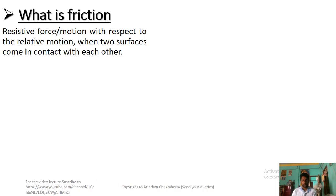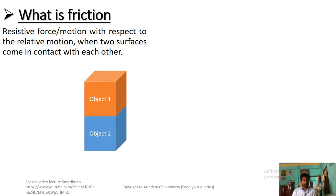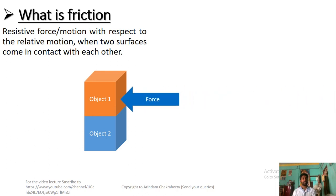Friction happens between two surfaces of objects which come in contact with each other. Consider object 1 and object 2 in contact. Whether object 2 is moving in one direction and object 1 is moving in another direction, or one is static, the phenomenon occurs in both static and dynamic positions. If a force is applied on object 1 towards the negative x direction, there will be an anti-force — that anti-force is termed as friction — working on object 2.